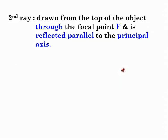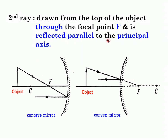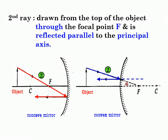The second ray is opposite from the first. For a concave mirror, draw from the top of the object through the focal point, then reflect it parallel to the principal axis. For a convex mirror, draw from the top of the object toward the focal point behind the mirror — use dotted lines wherever the path goes behind the mirror — then reflect it parallel to the principal axis.